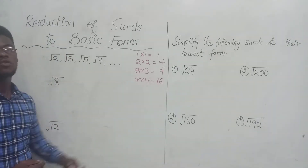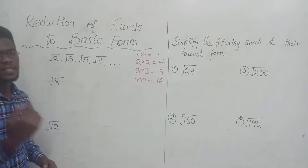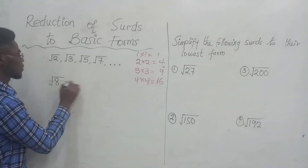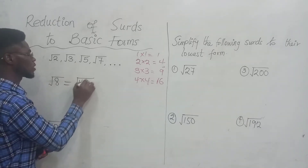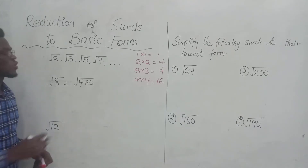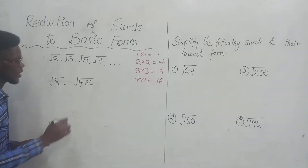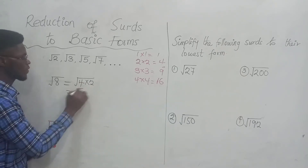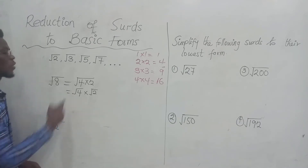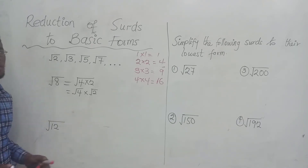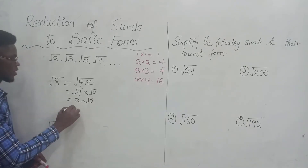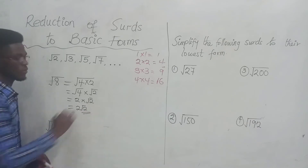We are talking about two numbers that when you multiply give you the number under the radical — in this case, 8 — and one of them is a perfect square. So the two numbers are 4 times 2. 4 times 2 gives me 8, and 4 is a perfect square. Each of them picks the square root sign: square root of 4 times square root of 2. The square root of 4 gives me 2, times square root of 2, and this equals 2 root 2.